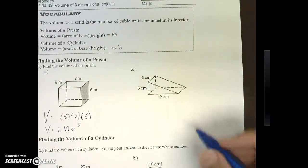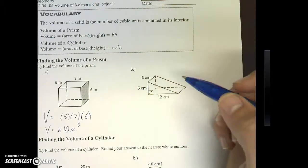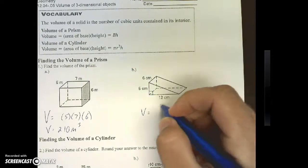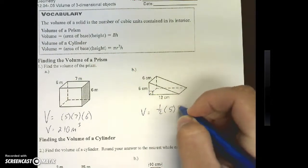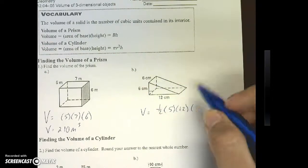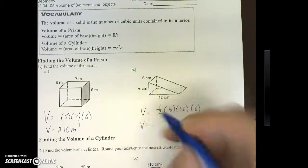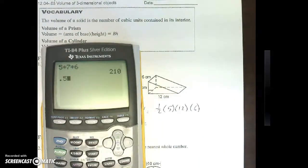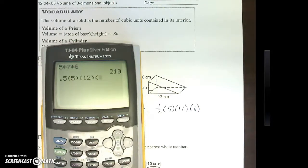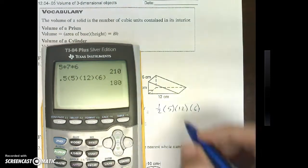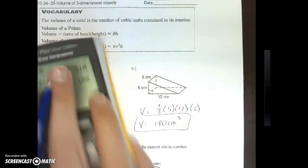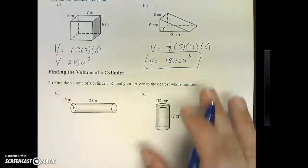Now for part B, this is a triangular prism. So what I'm looking for here is volume equals the area of my base is one-half, five times twelve, and the height is the distance between them, which in this case is six. If you're looking to put one-half in your calculator, I always use 0.5, it just seems easier. Parentheses five, parentheses twelve, parentheses six, and we get 180 centimeters cubed.